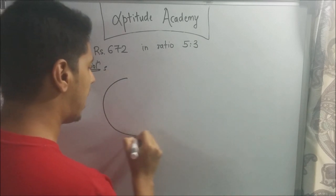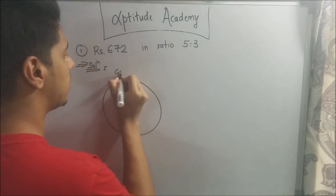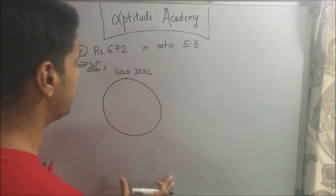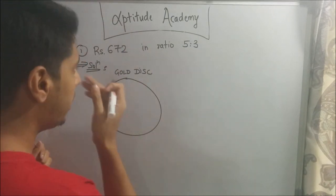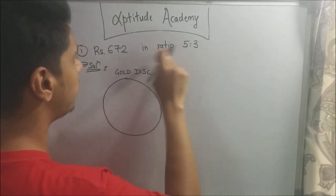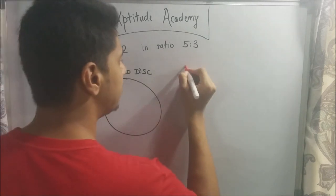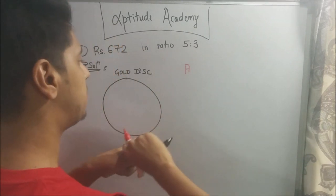So, suppose we have to divide rupees 672 in the ratio of 5 is to 3. Let's assume that we have a gold disk. Now, realistically you are not going to get any gold disk for rupees 672. We have to divide it in the ratio of 5 is to 3. So, assume there is person A and there is person B.